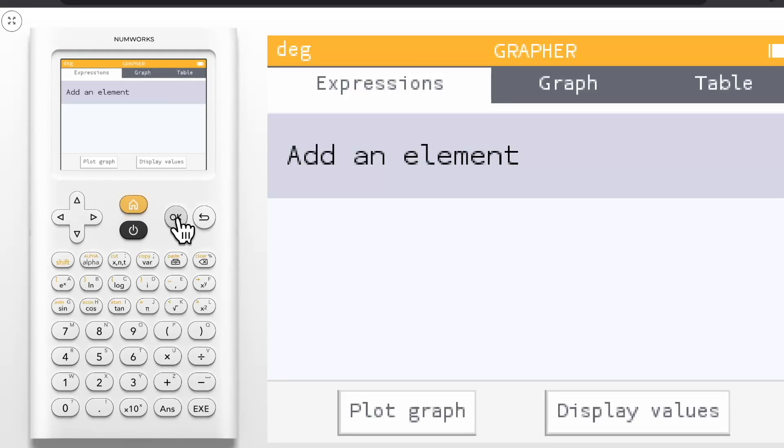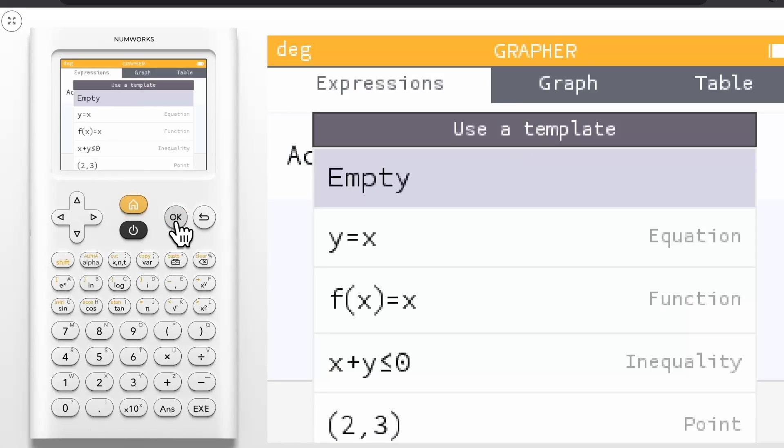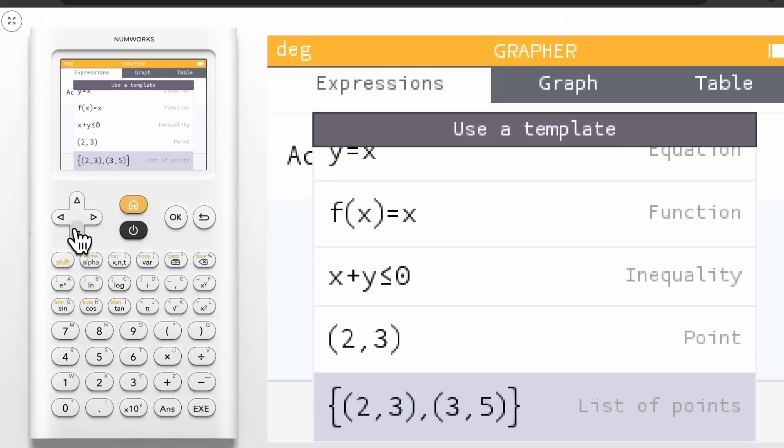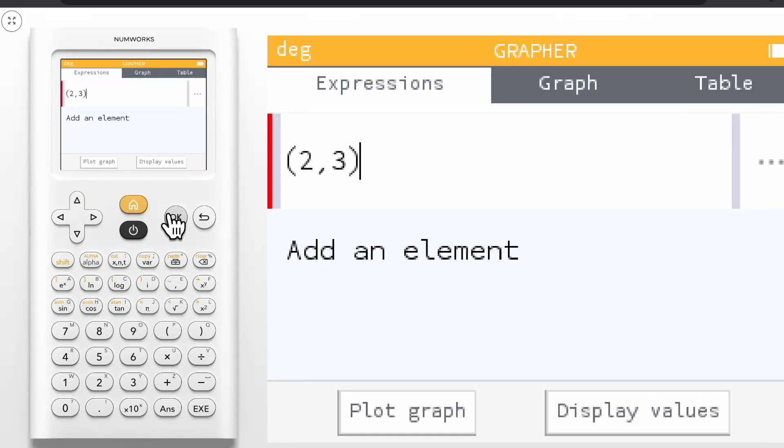To begin, let's press OK to access our templates. With version 21, we now support plotting points and lists of points in the grapher app, and you'll see two new templates in the menu. You can press OK on these templates to edit them as needed. For example, I'll press OK on the point template. Notice that with version 21, you now edit the expression directly in the field, not in an editing bar on the bottom of the screen. This is true for inputting expressions in the grapher application, equations in the equation app, and sequences in the sequence app. Let's use our arrows to navigate inside the point and change the point to negative 3, 4.